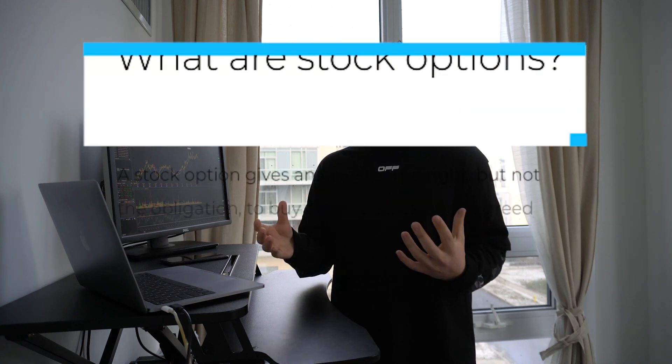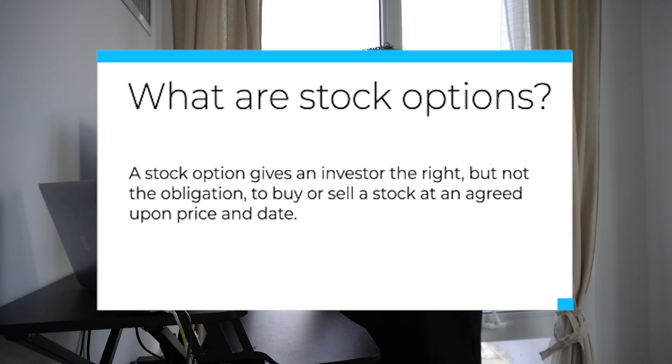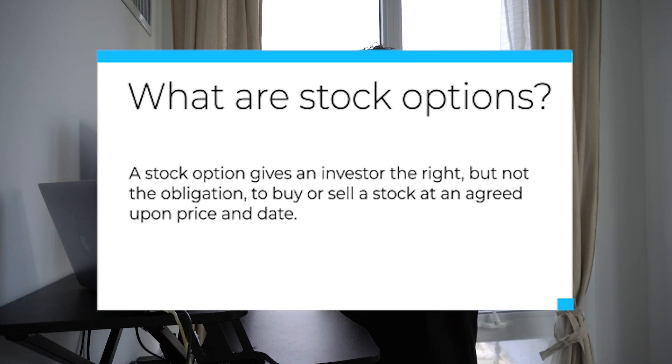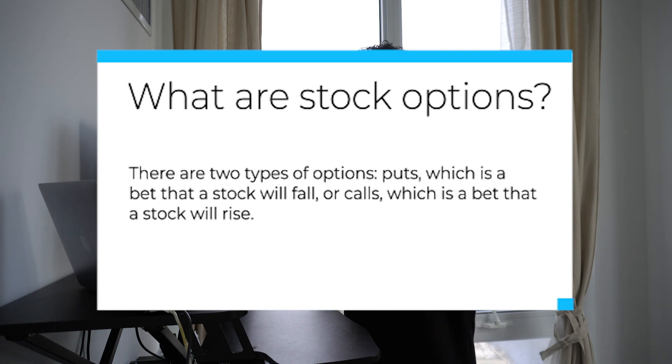A stock option gives an investor the right, but not the obligation, to buy or sell a stock at an agreed upon price and date. There are two types of options: puts, which profit if a stock falls, and calls, which profit if a stock rises. Open interest — which is what we're going to be using for this strategy — is the total number of contracts existing for one stock with one expiration date at one strike price.